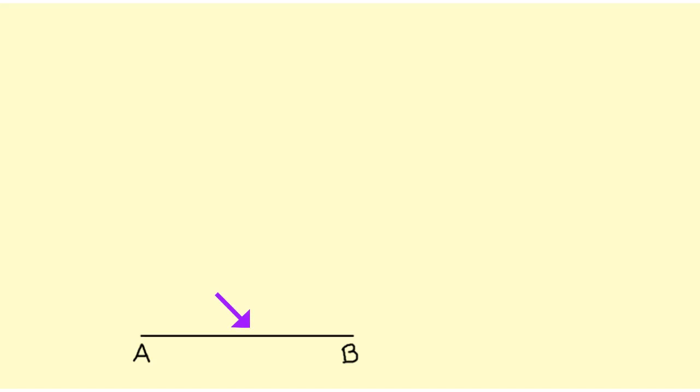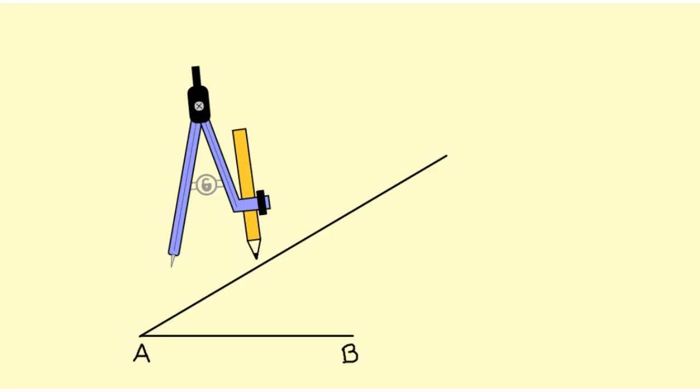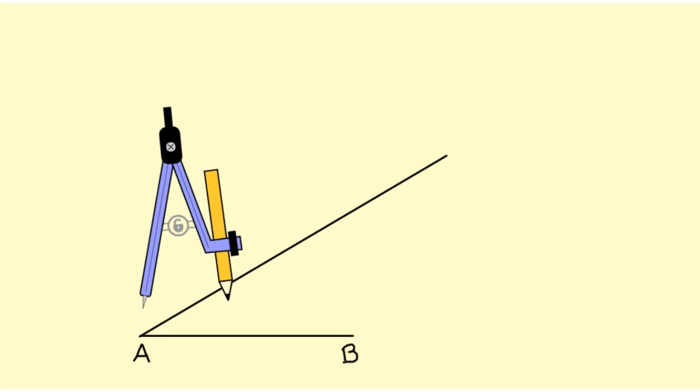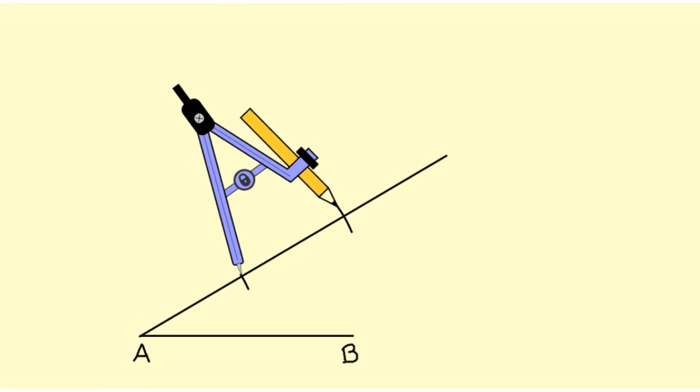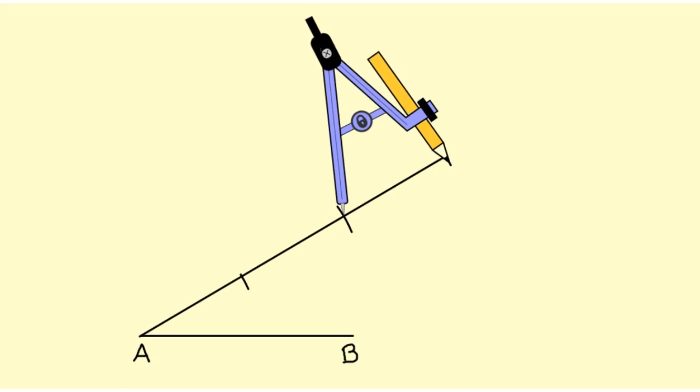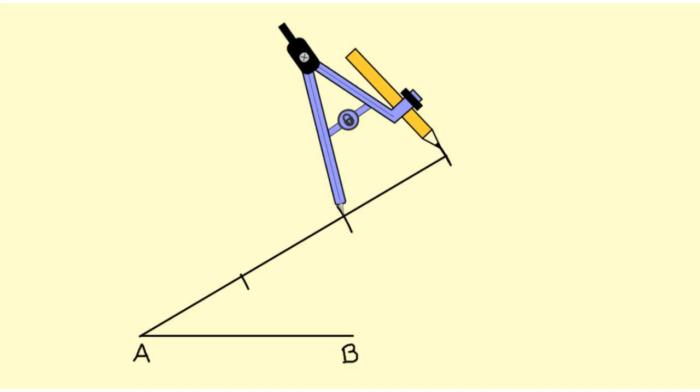You see I've drawn my ray—doesn't matter how long it is—and now I'm going to mark off along that segment three congruent segments. So I think I'll make them a little bigger this time. So there's one, let's draw two more. And it looks like I barely had that ray drawn long enough, but that's fine. We'll label those points C, D, and E.